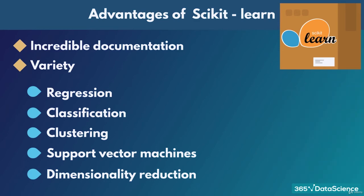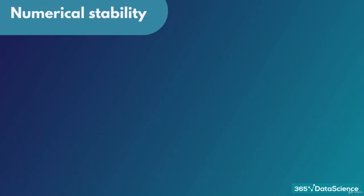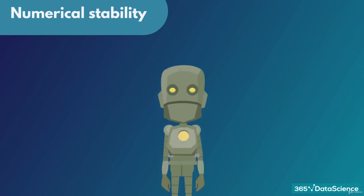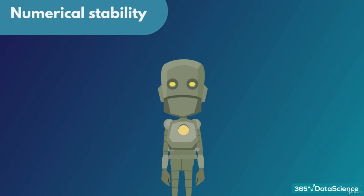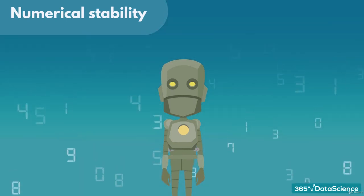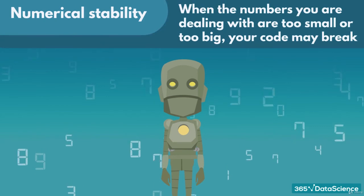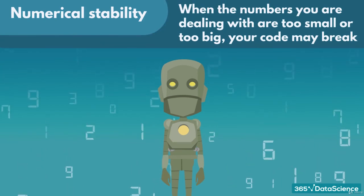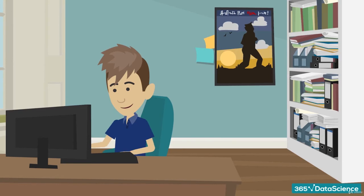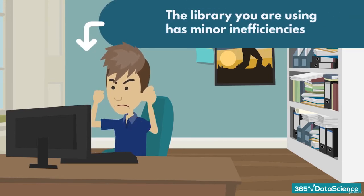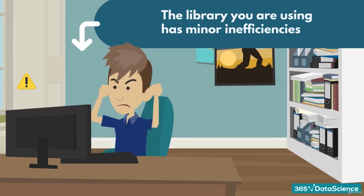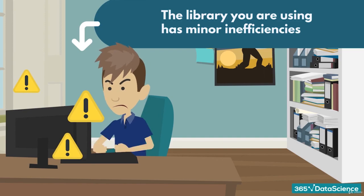Finally, sklearn is famously numerically stable. That's something which is hard to explain if you've never seen an error caused by numerical instability. The basic idea is that training an algorithm is about performing complicated mathematical operations in the background. When the numbers you are dealing with are too small or too big, your code may break. Not because of your programming skills, but because the library you are using has some minor inefficiencies, which may turn into big problems.